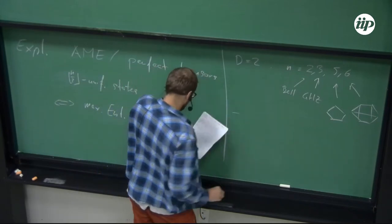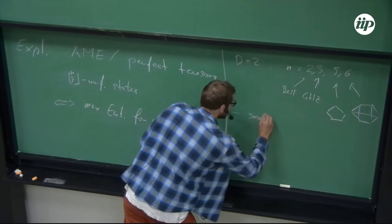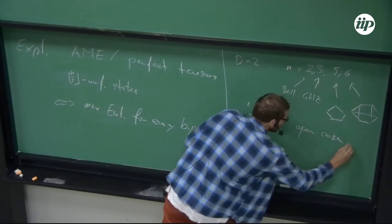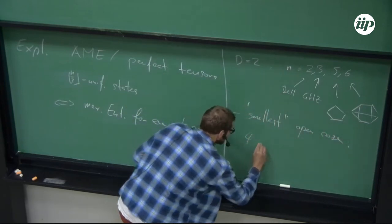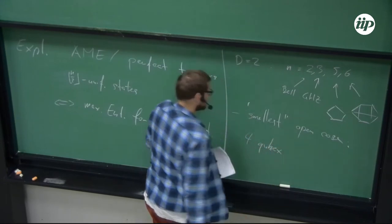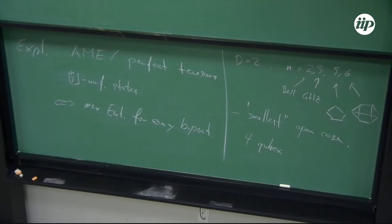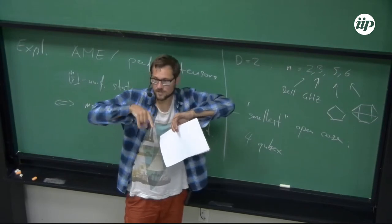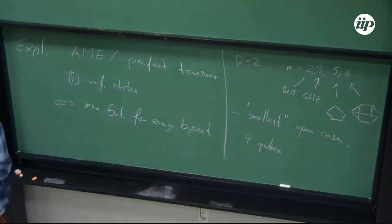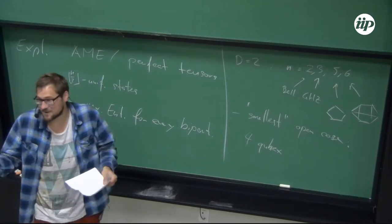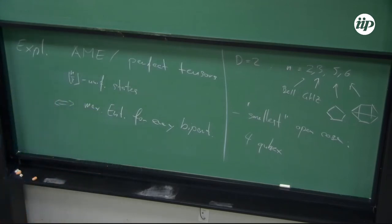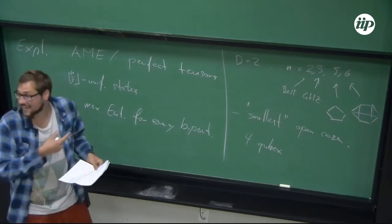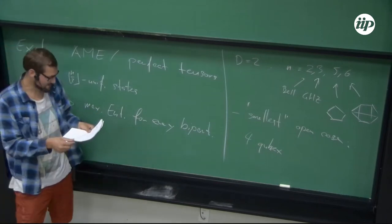The smallest open case would be four qu-hex — four six-level systems. This is related in the classical case to Euler's officers problem, where you arrange 36 officers in a square such that in every row and column there is an officer of different rank and of different regiment. It's a very famous problem by Euler, and it's why Karol Życzkowski likes this problem a lot.